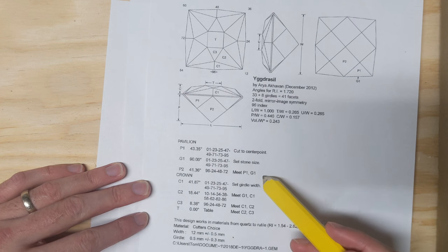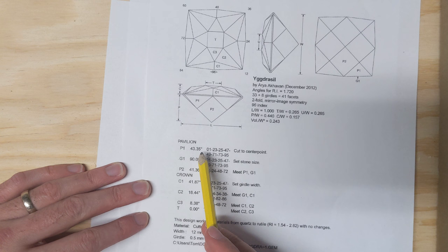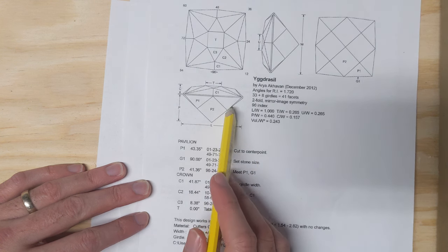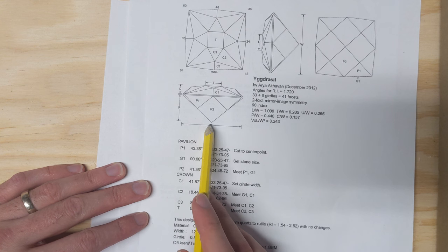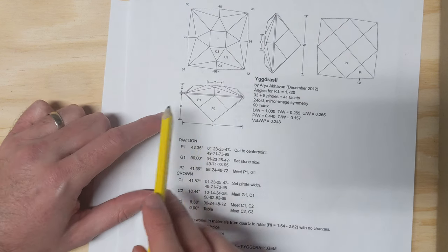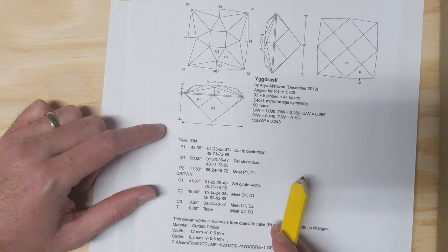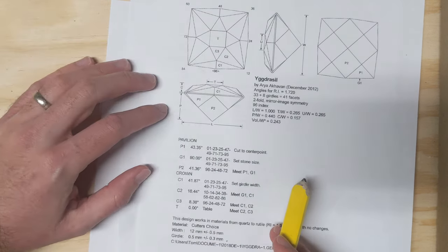There are usually tips next to the instructions. For this one, you're cutting to a center point, which means all your facets will cut to a center point. You can use that to judge if you're even as you cut around the stone, make sure they all come to a nice point that's centered in the stone rough you have.